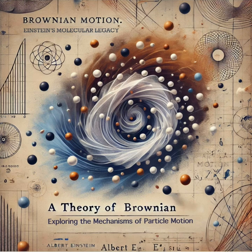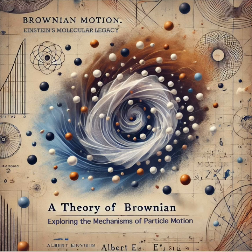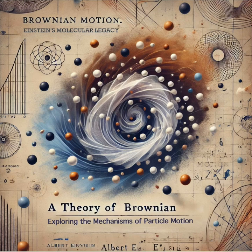Brownian motion is also super important for understanding how cells work. Think about how nutrients and waste products move across cell membranes — a lot of that movement is driven by Brownian motion. Those tiny particles are constantly jiggling and bumping into each other, helping to transport stuff around inside the cell. And it's not just about transport: Brownian motion also plays a role in cell signaling and even DNA replication. This seemingly random jiggling is actually essential for life itself.